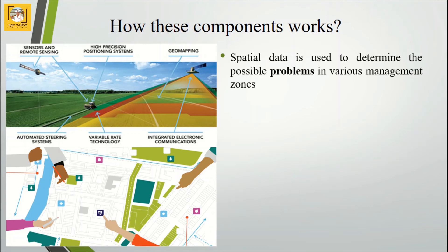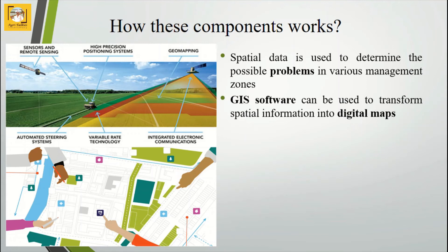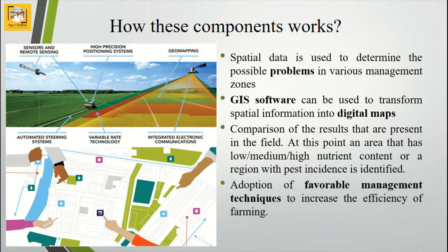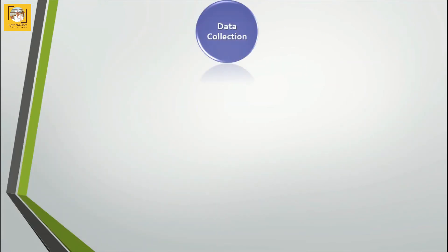The spatial data is used to identify possible problems in the various management zones, as seen in the first picture. GIS software is then used to transform spatial information into a digital map, as shown in the second picture. A comparison of results from the field identifies areas with low, medium, or high nutrient content, or regions with pest and disease incidence. Favorable management techniques are then adopted to increase the efficiency of the farm.